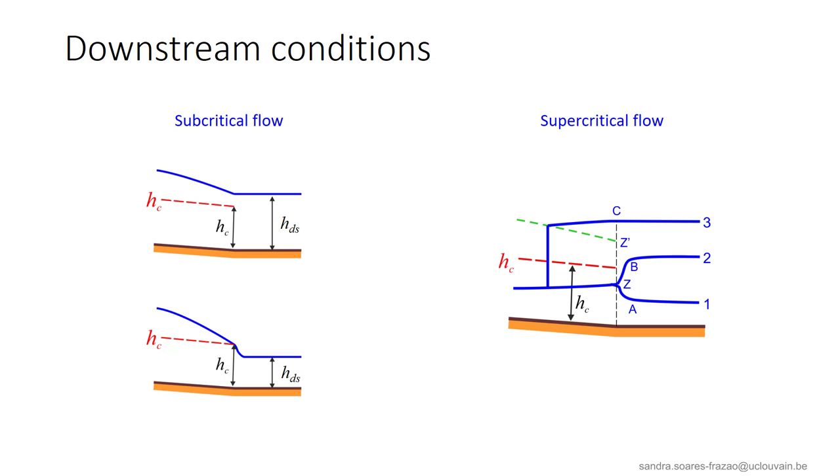If the flow is supercritical, different situations can be identified depending on the downstream level. For a downstream level below HC, as indicated by the situation number 1, the flow just spills freely in the reservoir through point A. Indeed, no direct connection is possible downstream for a water profile controlled by the upstream conditions. If the downstream level is larger than HC, there is a possibility of hydraulic jump. However, this only happens if the sequent level at point Z, indicated by Z' here, is below the downstream level.